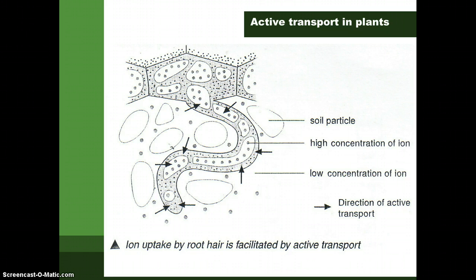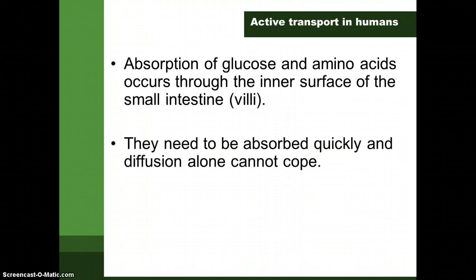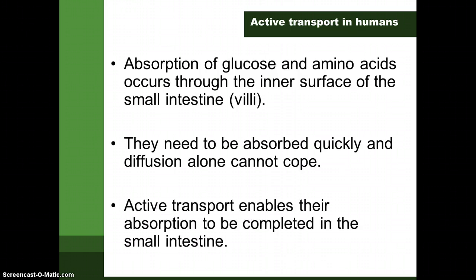Examples of active transport include: the absorption of mineral salts from soil by plants, and the absorption of glucose and amino acids in the small intestines. Mineral salts are very dilute in the soil but more concentrated in the vacuoles of the root hair cells, so they cannot diffuse across the membrane — therefore, iron uptake by root hair cells is facilitated by active transport against a concentration gradient.